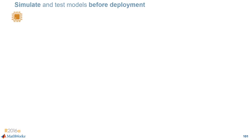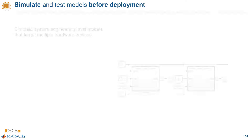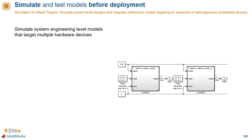We know that desktop simulation is a fast and cost-effective way of testing your design. Ideally, you should be simulating and testing before deploying to hardware. The new capability here is that if you have a parent model that includes reference models targeting different hardware, you can still simulate that system level design.